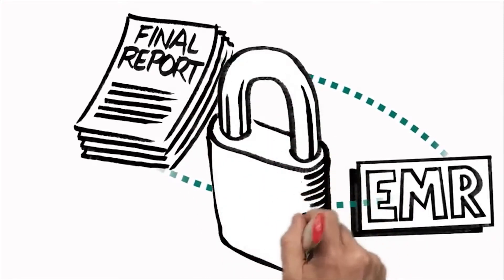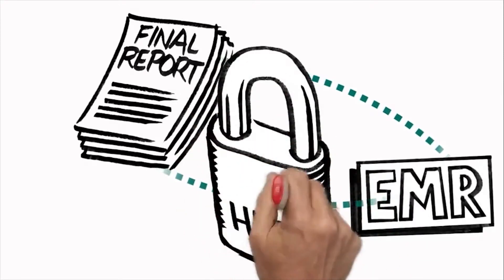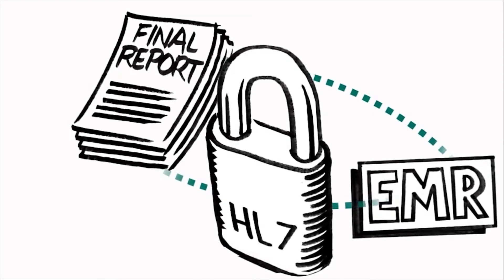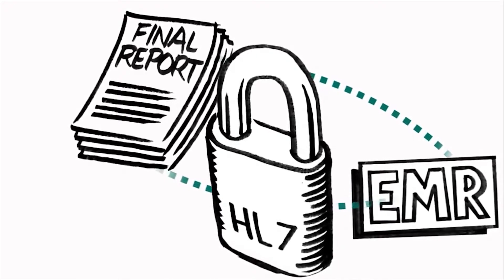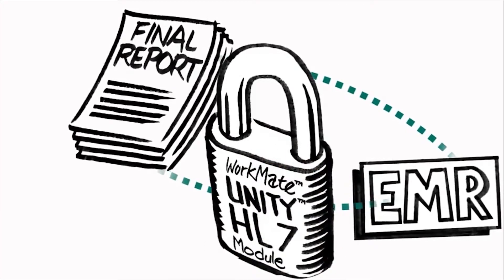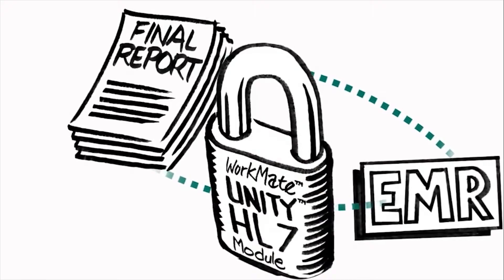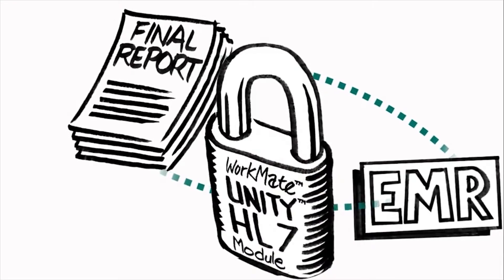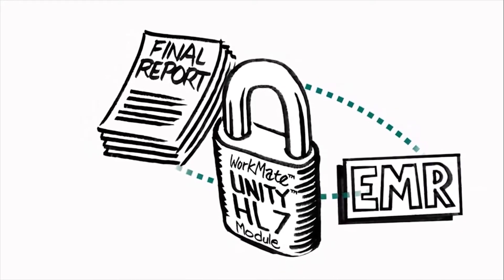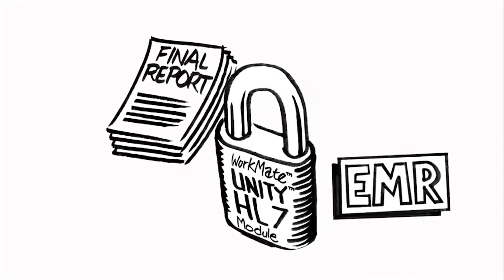Usually referred to as Health Level 7 or HL7, that uses a set of standards regulating how electronic health information can be retrieved and shared. To allow for a connection between the Workmate Claris system and the hospital's EMR system, SJM offers an optional Workmate Unity HL7 module. This software is installed at the customer site and configured to the hospital's systems. The Workmate Unity HL7 connection allows for the final case report to be saved to the hospital's EMR in one of two ways.